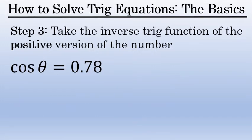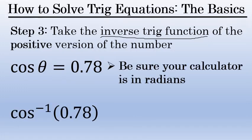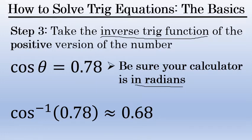Now that I know the solutions will be in quadrant one and quadrant four, I'll use the inverse trig function on the positive version of the number. The cosine of theta equals 0.78, so I'll do the inverse cosine of 0.78 with my calculator in radians. The result is approximately 0.68 radians, rounded to the nearest hundredth. The actual value of the inverse cosine of 0.78 is irrational, but to two decimal places the result of step three is 0.68.